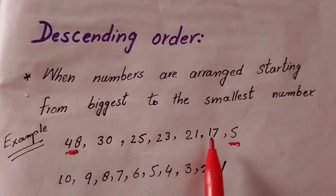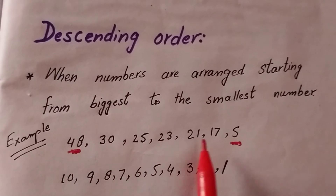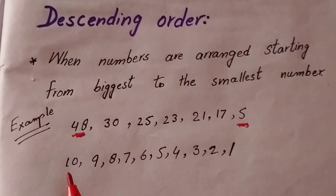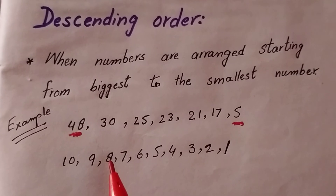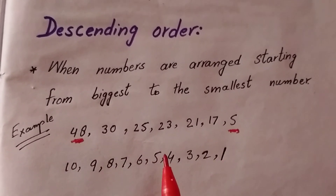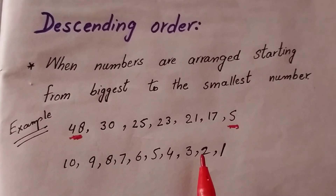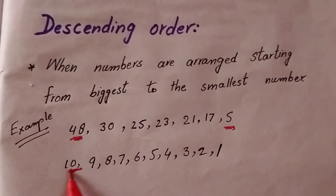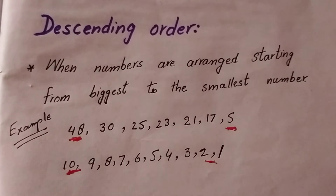We arrange the value from biggest to the smallest. Another example: 10, 9, 8, 7, 6, 5, 4, 3, 2, 1 — starting from the biggest to the smallest number.